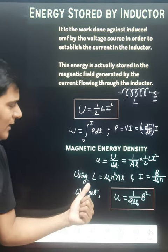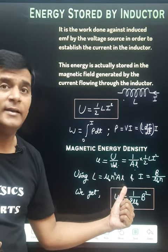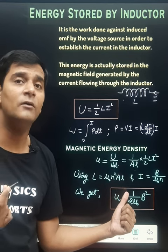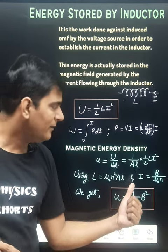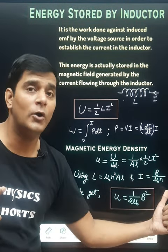We can use the expression L equals mu naught n squared AL, where n is total number of turns per unit length, and i is B upon mu naught n.